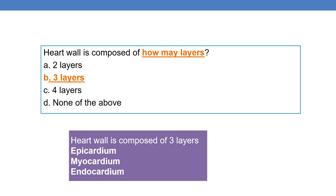Next question: the heart wall is composed of how many layers? As we have discussed earlier, the heart wall is composed of three layers. What are they? Epicardium, myocardium, and endocardium. So the correct option is option B.